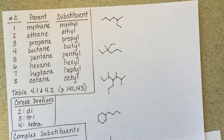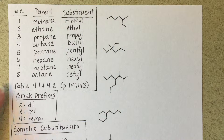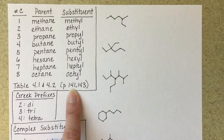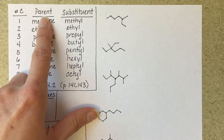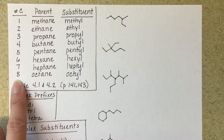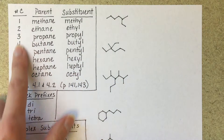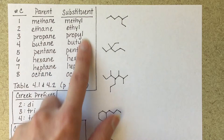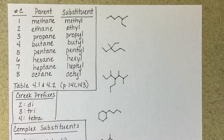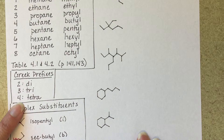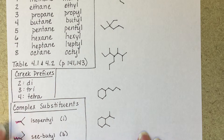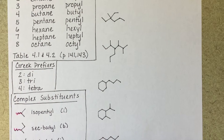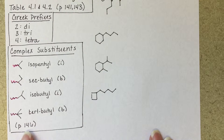There is some memorization involved in nomenclature. In your textbook, tables 4.1 and 4.2 on pages 141 and 143 give you the names of the parent chains based on the number of carbon atoms, and the names of substituents based on the number of carbon atoms. You need to memorize this information for carbons 1 through 10. You need to remember your Greek prefixes: 2 is di, 3 is tri, 4 is tetra, 5 is penta, 6 is hexa. You also need to memorize complex substituents found on page 146 in your textbook.